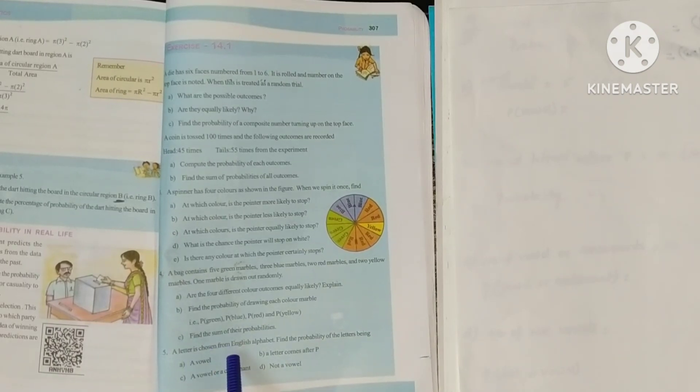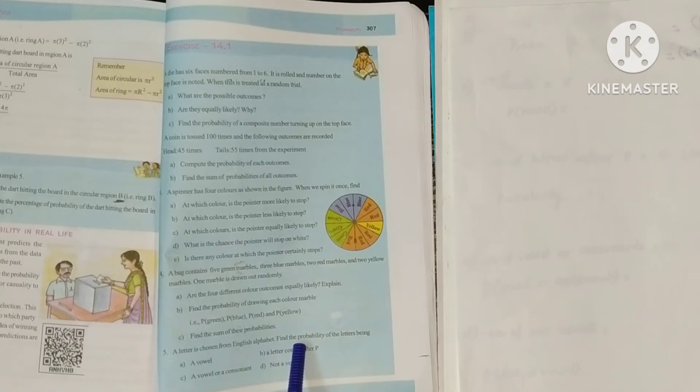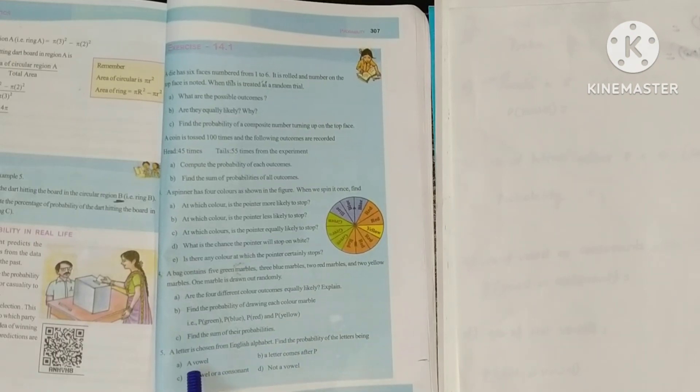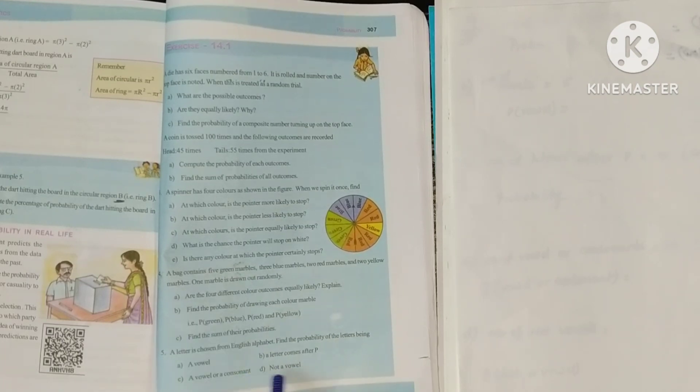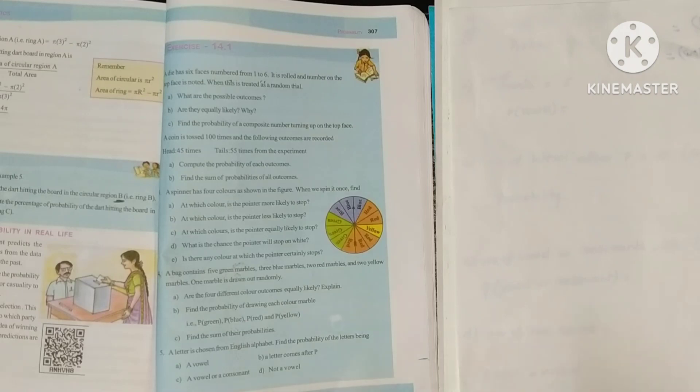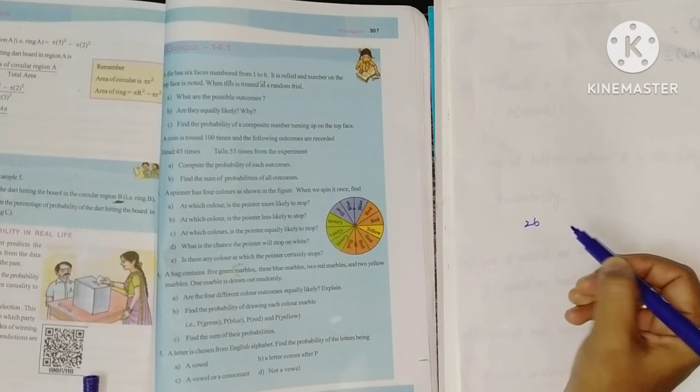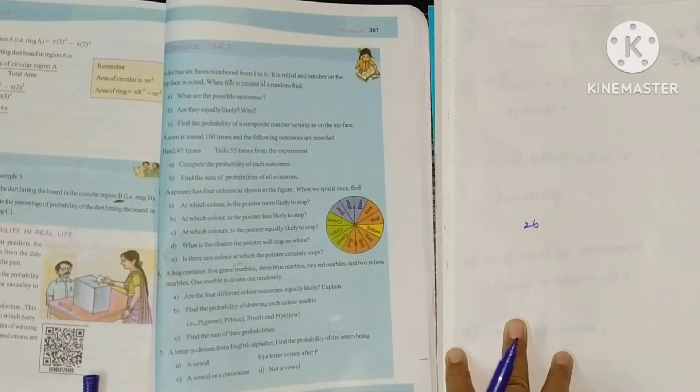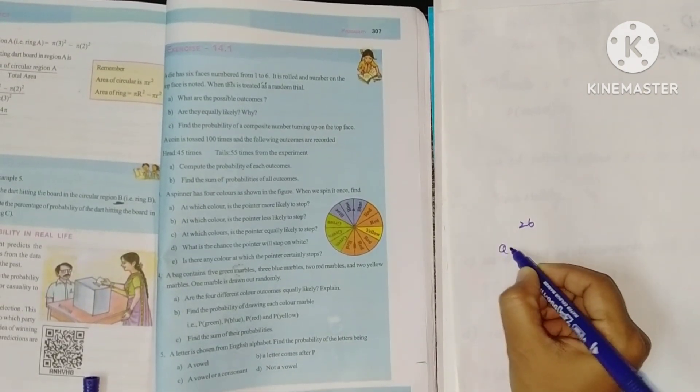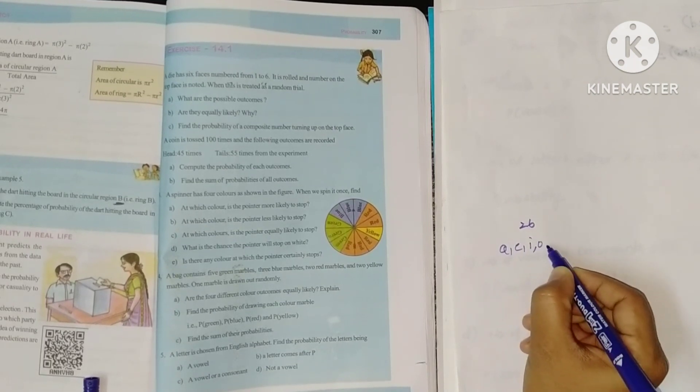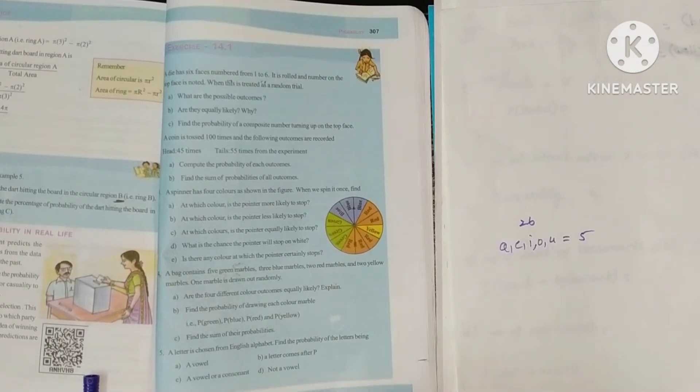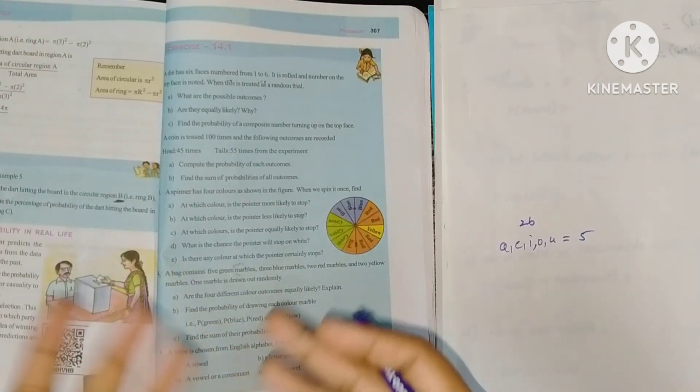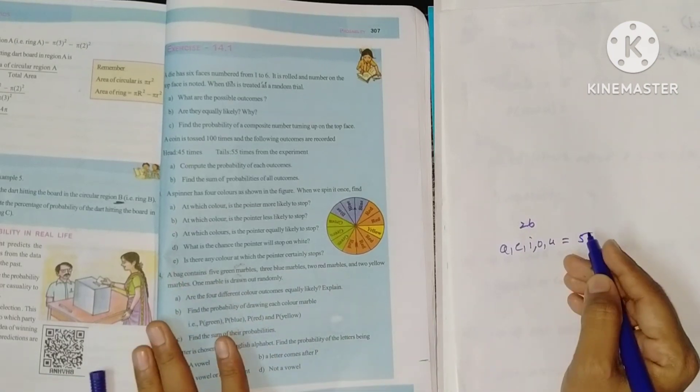Fifth problem: A letter is chosen from the English alphabet. Find the probability of the letter being a vowel, a letter comes after P, vowel or a consonant, and not a vowel. So first of all, you know how many letters are there in the English alphabet? 26. And I've done that also. Vowels are A, E, I, O, U.